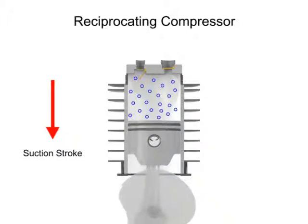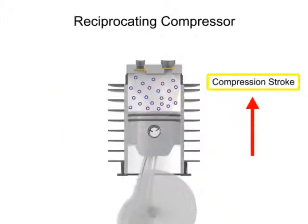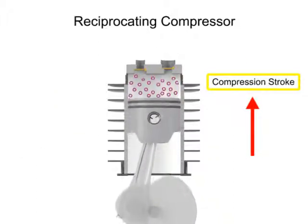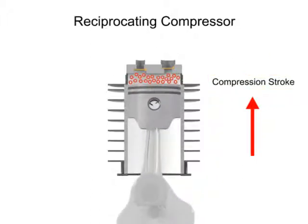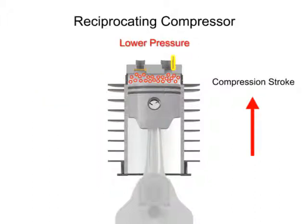The upward stroke is called the compression stroke. As the piston begins its upward compression stroke, the volume within the cylinder decreases. The decrease in volume causes the pressure to increase, which opens the outlet valve and compressed air discharges from the cylinder.